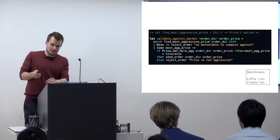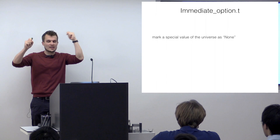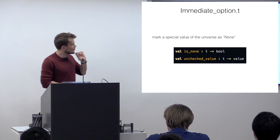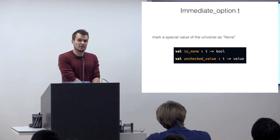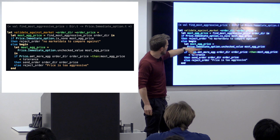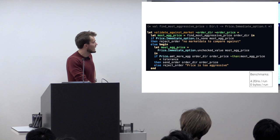What do you do to avoid this? You build something called an immediate option, where you take the universe of integers and remove one value from it — saying that value now represents 'none'. You can't use it as a real value anymore, but the rest of the values are just immediate integers. You put a type-safe interface around it. That's pretty straightforward and avoids having to allocate. And who's going to have a price of min-int anyway? Nobody. So the rewritten code still has find-most-aggressive-price, still rejects if it's not there, still does the same checks. If you benchmark it now: no allocation. We've eliminated the allocation.